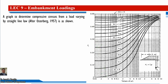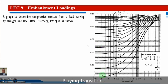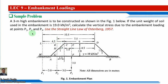Sample problem: A 3-meter high embankment is to be constructed as shown in Figure 1. The unit weight of soil used in the embankment is 19 kN/m³. Calculate the vertical stress due to embankment loading at points P1, P2, and P3 at a depth z = 3 meters, using the straight-line law of Osterberg 1957.